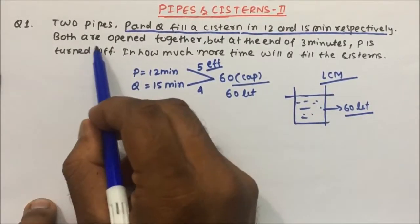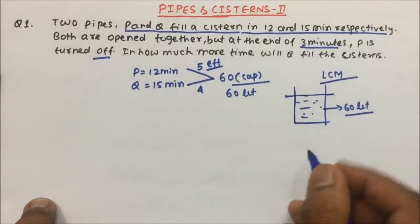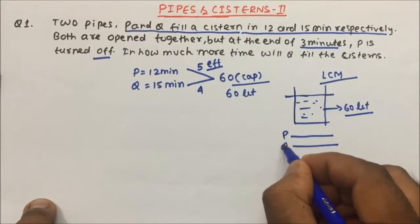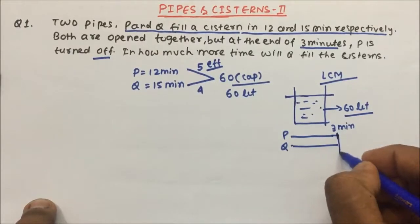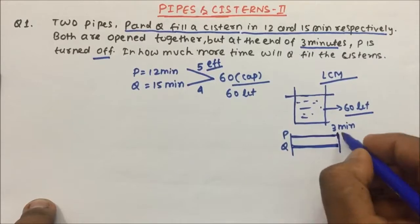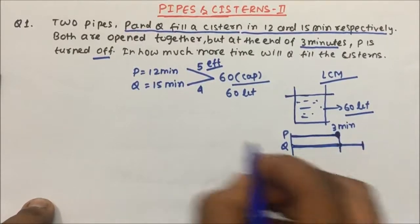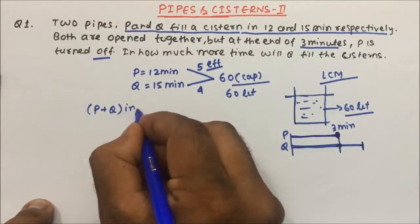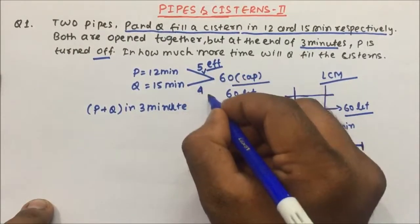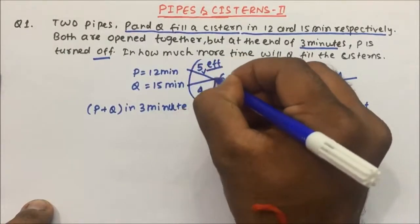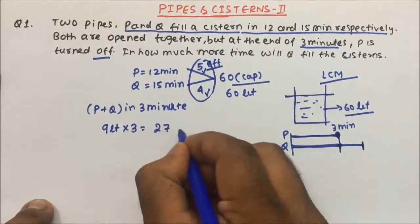Now both pipes are open together, but at the end of 3 minutes P is turned off. So for 3 minutes both P and Q are open; after 3 minutes P is closed and only Q works. P plus Q together fill 9 liters per minute (5 + 4). Working for 3 minutes, they fill 27 liters.